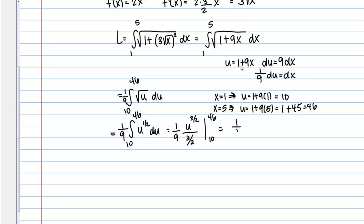So I can write that as 1 9th times 2 thirds, and then if I plug in my bounds, I'm going to get 46 to the 3 halves minus 10 to the 3 halves. Or 2 over 27 times 46 to the 3 halves minus 10 to the 3 halves, and we'll just leave our answer like this.